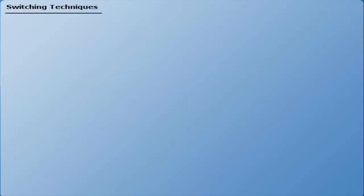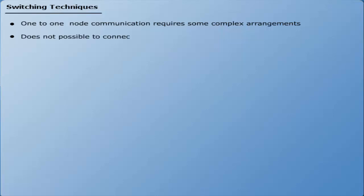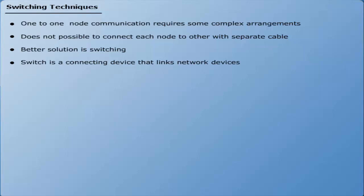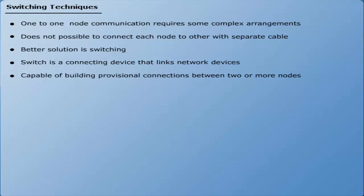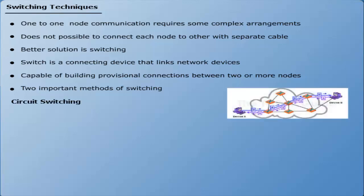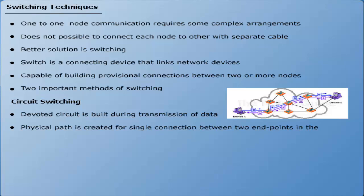In a network, one-to-one node communication requires complex arrangements — it is not possible to connect each node to another with a separate cable. A better solution is switching. A switch is a connecting device that links network devices and can build provisional connections between two or more network nodes. There are two important methods of switching: circuit switching and packet switching. In circuit switching, a dedicated circuit is built during transmission of data. A physical path is created for a single connection between two endpoints in the network for the duration of the connection.